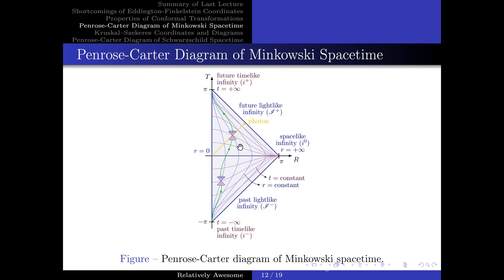Now, lines of constant small t and constant small r are related to capital T and capital R by some complicated function, and thus look curvy on the Penrose-Carter diagram. Moreover, light cones are 90-degree angles in this conformal spacetime. Now, let us discuss some points of interest. I⁺ corresponds to the point where small r equals constant and small t equals plus infinity, and I⁻ corresponds to small r equals constant and small t equals minus infinity. These are called future and past time-like infinities respectively. In the capital R–T plane, these correspond to capital T equals π and capital R equals 0, and capital T equals minus π and capital R equals 0, respectively.